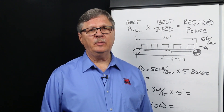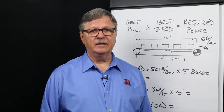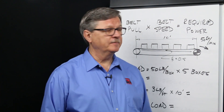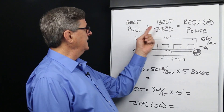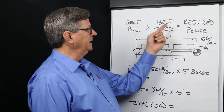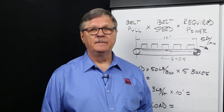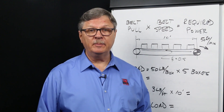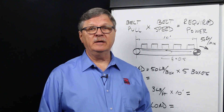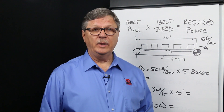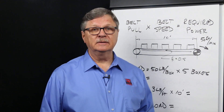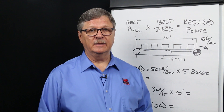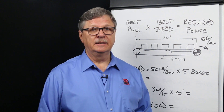We know that the power required to move a load on a belt conveyor equals belt pull times belt speed. The belt pull required to move packages on a slider bed conveyor equals the total weight of all packages plus the weight of the belt, times the coefficient of friction between the bottom of the conveyor belt and the top of the slider bed.